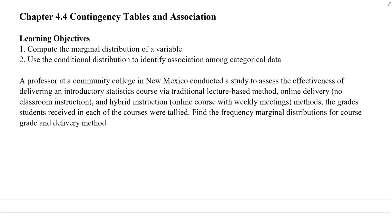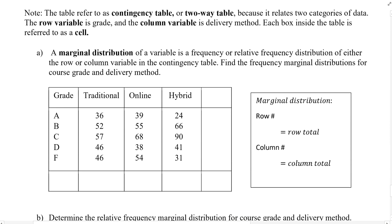Let's take an example. A professor at a community college in New Mexico conducts a study to assess the effectiveness of delivering an introductory statistics course using three different methods: a traditional lecture method, online delivery with no classroom instruction, and a hybrid of these two methods. The student grades at the end of the course are recorded. The table is a contingency table, or two-way table. The rows represent grades (A, B, C, D, F) and the columns represent delivery method (traditional, online, hybrid).